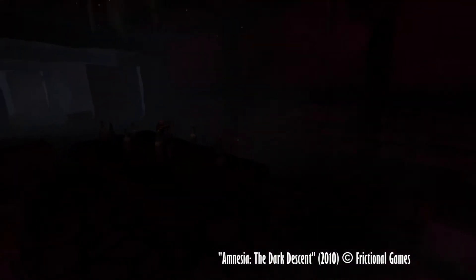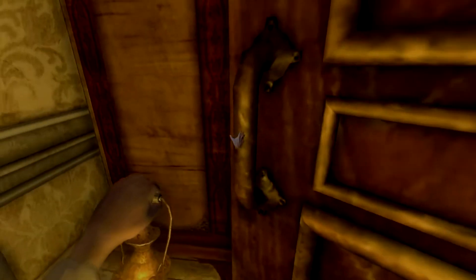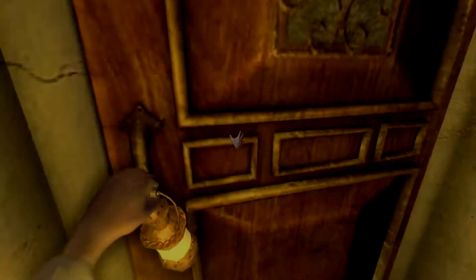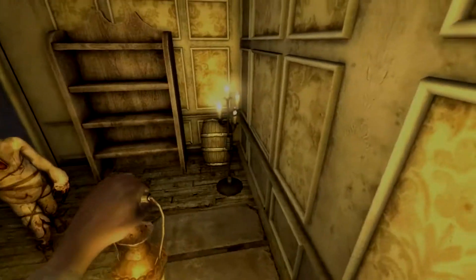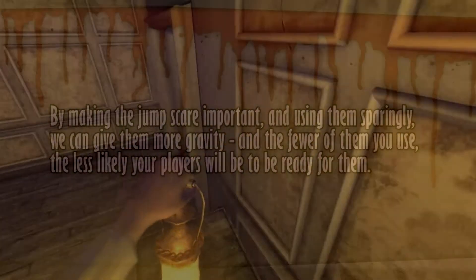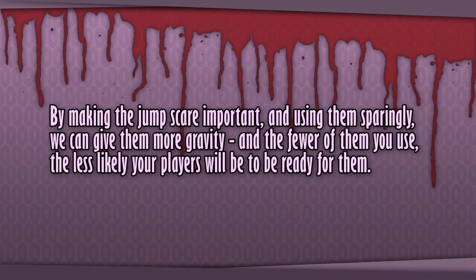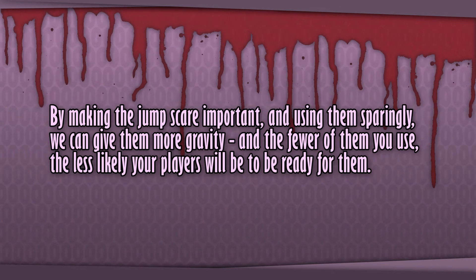Amnesia: The Dark Descent was a good example of well-made jump scares. You would play the game for hours at a time potentially without even seeing a monster, if you were taking it slow. You'd know that they were around, you may even have evaded one fairly recently, but when one smashes down the door you're about to open, that's a really significant moment — a transitioning point between creeping around the spooky castle to running for your life. By making jump scares important and using them sparingly, we can give them more gravity, and the fewer you use, the less likely your players will be ready for them when you do. They're a fantastic and effective tool, but they're also a grenade. If you only ever use grenades, your players will stop panicking about them when they see one. And that's what it should be: a weapon in an arsenal of horror tricks.